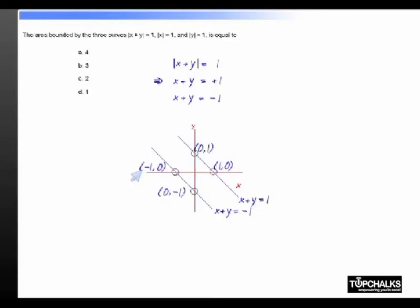We also have modulus of x is equal to 1 which means x is equal to 1 or x is equal to minus 1. x is equal to 1 is a graph like this, x is equal to minus 1 is a graph that passes through this point. And modulus of y is equal to 1 means y equal to plus 1 or y equal to minus 1.